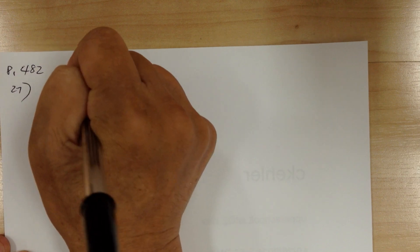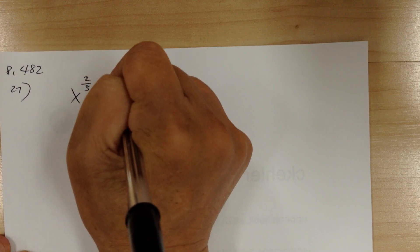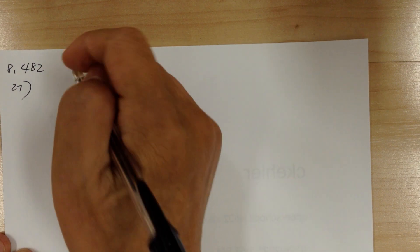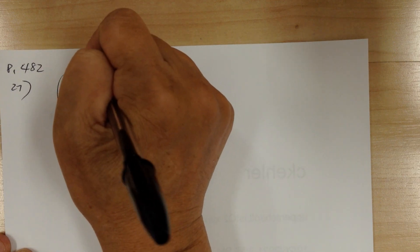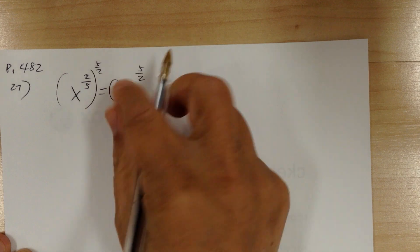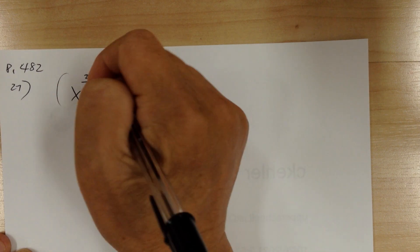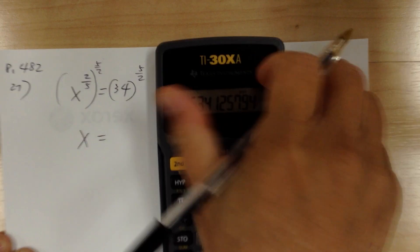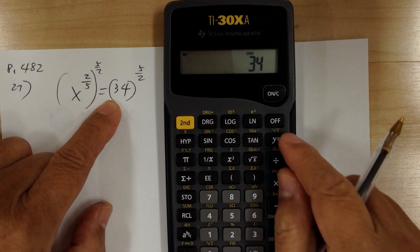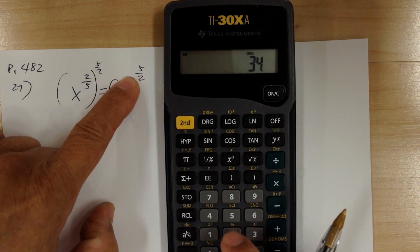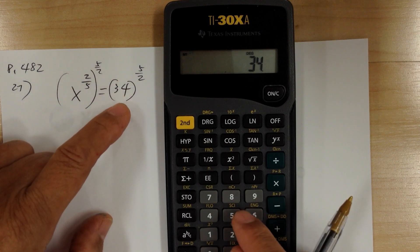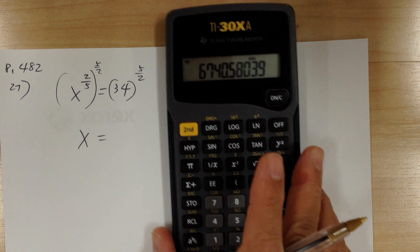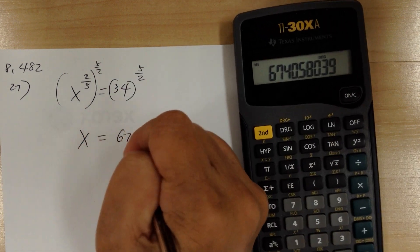Number 27: x to the two over five power equals 34. To solve for x, get rid of the exponent by raising both sides to the 5 over 2 power — the reciprocal — so 2 over 5 times 5 over 2 becomes 1, giving x to the 1. Use your calculator: enter 34, raise it to the 2.5 power, equal. Rounded to three significant digits, it would be 6740.